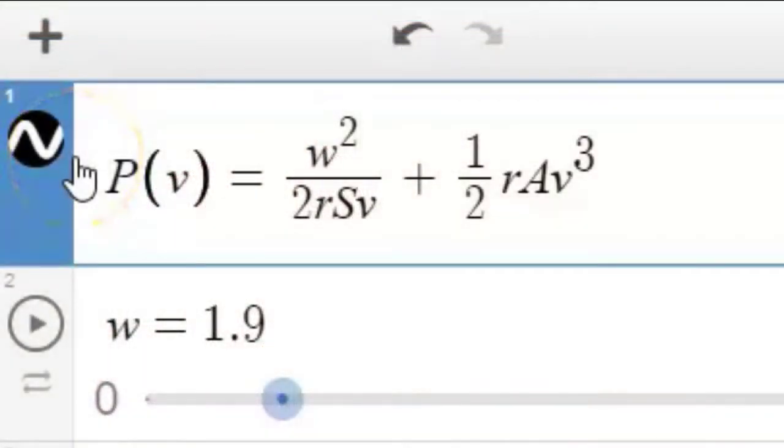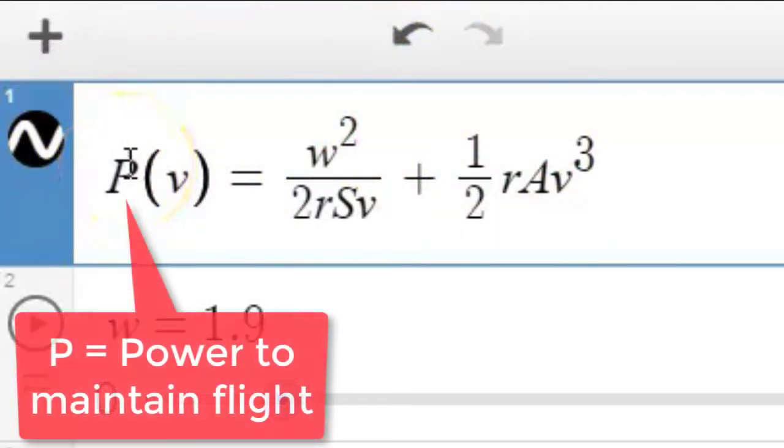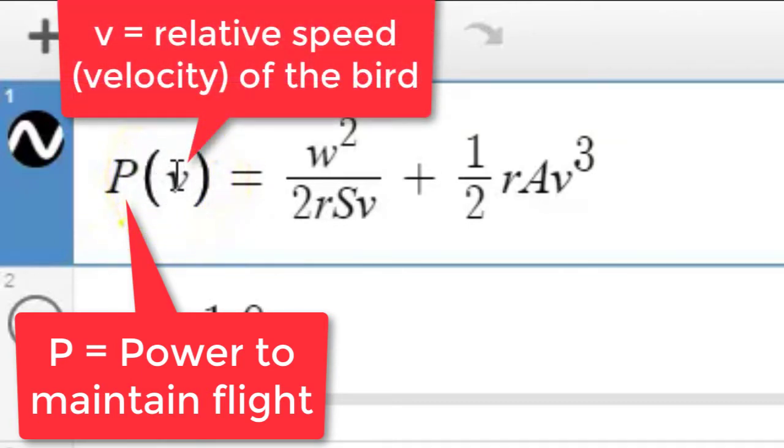Do birds know calculus. In an article, or in a paper published in 1969 by C.J. Pennycuick, he did a study and has some experimental evidence to show that the power required by a bird to maintain flight is given by this formula right here. Now don't be too scared about all the letters in this formula. What we have here is P, the power required for a bird to maintain flight, depends on the variable V, and V is the relative speed of the bird.